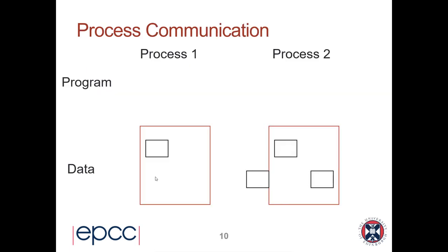Here's a little diagram to illustrate how process communication works in practice. We have Process 1 with some data and memory, and Process 2 with its own memory and data. Think of Process 1 running on my laptop in Edinburgh and Process 2 running on my collaborator's laptop in Australia. I want to send some data from Edinburgh to Australia, so my program sets a variable A to 23 in my memory space, and now I want to transfer that data to Process 2.